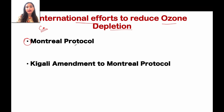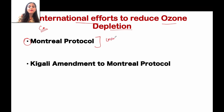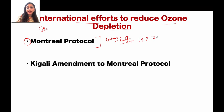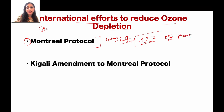The Montreal Protocol is a very successful protocol — all countries have universally ratified it. Ratification and signing was done in 1987. The purpose was that ozone-depleting substances will be phased out — their use will be minimized and eventually eliminated. This was the Montreal Protocol.